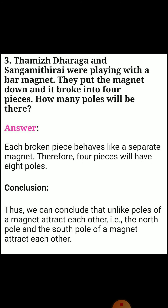Third one: two children were playing with a bar magnet. They put the magnet down and broke it into four pieces. How many poles will there be? Answer: each broken piece behaves like a separate magnet. Therefore, four pieces will have eight poles. Conclusion: we can conclude that unlike poles of a magnet attract each other — the north pole and the south pole attract each other.